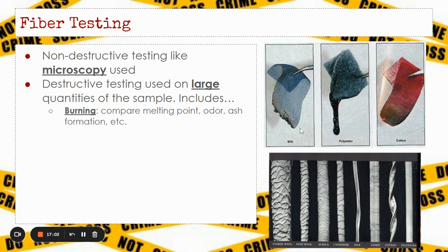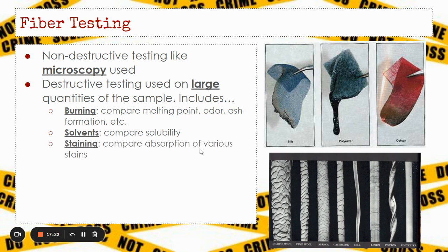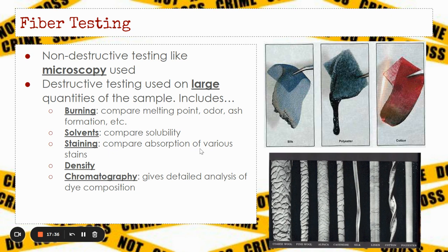For example, silk burns and leaves behind ashes, while polyester melts. We can also place fibers in different solvents and compare solubility — some fibers will dissolve in things like acetone, others will not. We can stain the fibers and compare their absorption of various types of stains. We can determine their density. We can use chromatography to get a more detailed analysis of what dyes are used in the creation of that textile. And we can do thermal decomposition, which breaks down the fiber into its simplest monomers — each fiber will have a unique thermal decomposition.